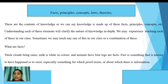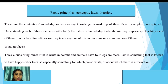These are the contents of knowledge — knowledge is made up of facts, principles, concepts, etc. Understanding each of these elements will clarify the nature of knowledge in depth. What are facts? Thick clouds that bring rain, milk is white in color, and animals have four legs are facts. A fact is something known to have happened or to exist, especially something for which proof exists or about which there is information.